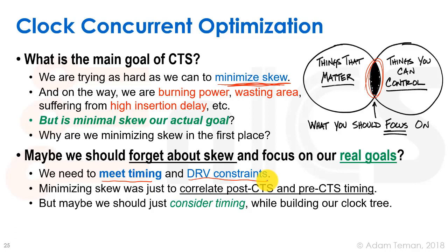The reason we're actually trying to minimize skew is because we didn't take skew into account at all pre-CTS. We met our timing assuming an ideal clock with no skew, and we want to build our clock tree while keeping that ideal. But is it worth the power, area, and high insertion delay? Minimizing skew is just to correlate post-CTS and pre-CTS timing — maybe we should just consider timing while building the clock tree.